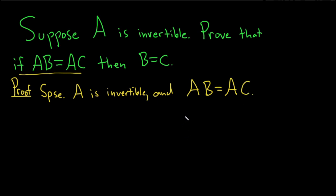So now we have to show that B is equal to C. So in order to do that we're going to use the fact that A is invertible. So since A is invertible, A inverse exists. So we have an inverse matrix.